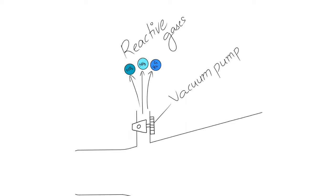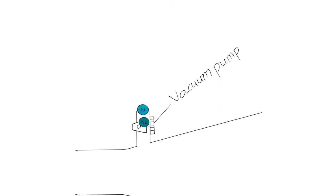So only the reactive gases that might interfere with the process are removed. Some non-reactive noble gases such as neon, argon, etc. might be added instead.